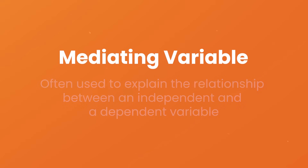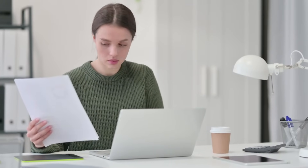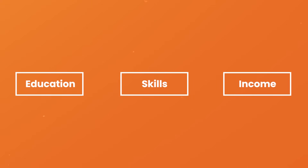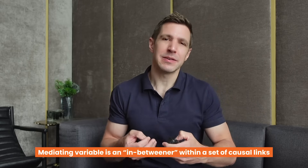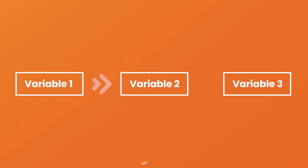The next type of variable you need to know about is the mediating variable. Mediating variables are often used to explain the relationship between an independent and a dependent variable. For example, if you were researching the impact of education levels on income, job skills could act as a mediating variable between those two things — while higher education might lead to higher income, the actual skills gained during that education are what make individuals more qualified for higher-paying jobs. Put another way, a mediating variable is an in-betweener within a set of causal links: if variable one impacts variable two, which then impacts variable three, then variable two is the mediator between one and three.